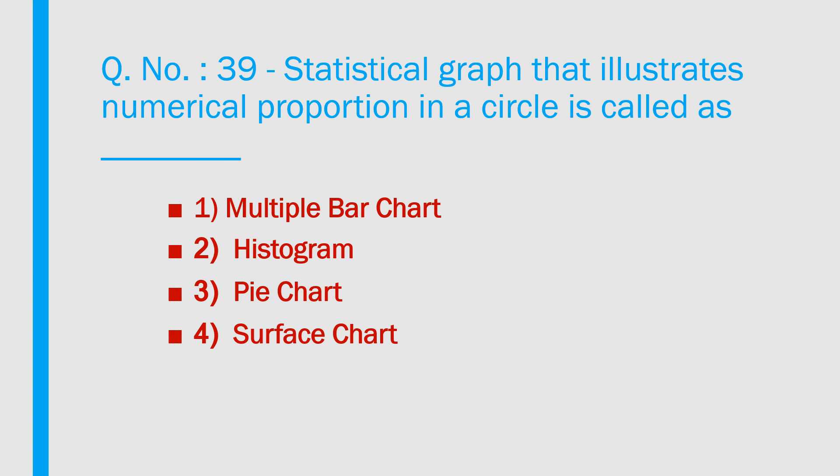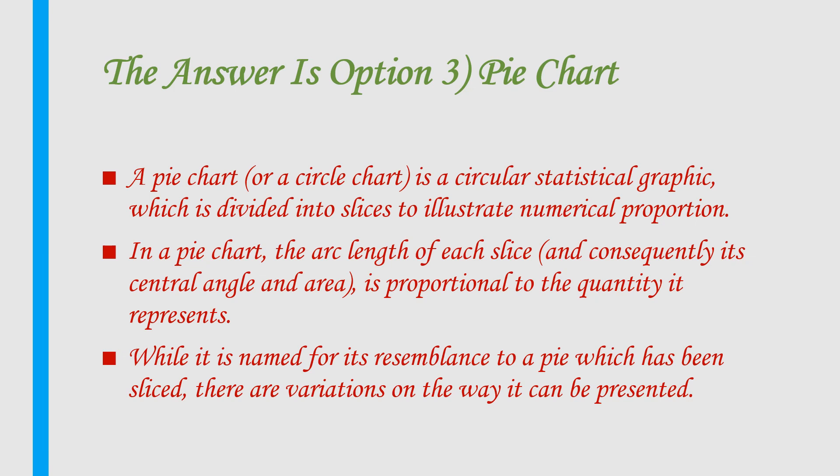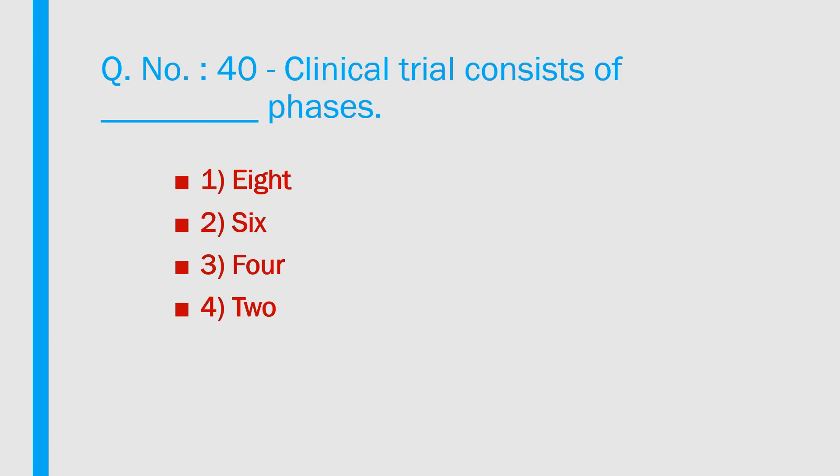Question number 39: A statistical graph that illustrates numerical proportion in a circle is called: 1) Multiple bar chart, 2) Histogram, 3) Pie chart, 4) Surface chart. Answer is option 3 — Pie chart. A pie chart or circle chart is a circular statistical graphic divided into slices to illustrate numerical proportion. The arc length of each slice, and consequently its central angle and area, is proportional to the quantity it represents.